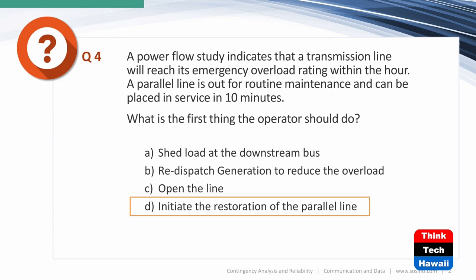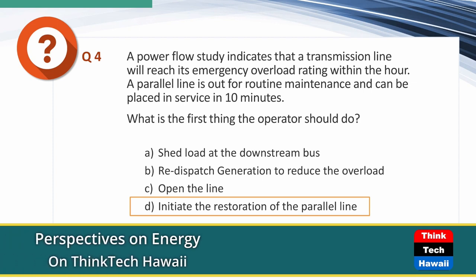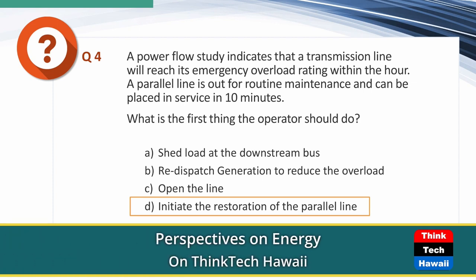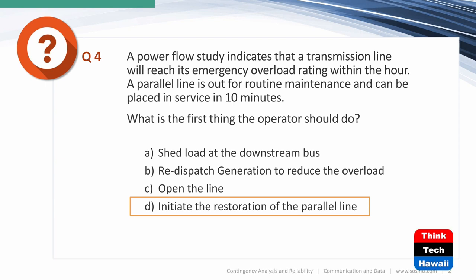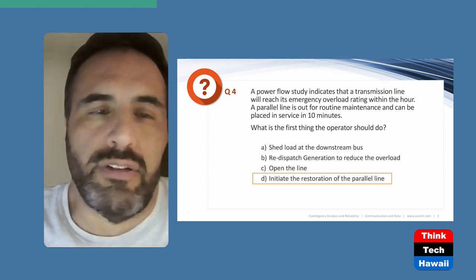The line is going to reach overload, which probably means load is increasing. This may impact your decision-making. Everything you do in system operations has to be run through a power flow — you don't want to be in a state you haven't studied. Part of that involves understanding where you're going to be and predicting what the next contingency will be.